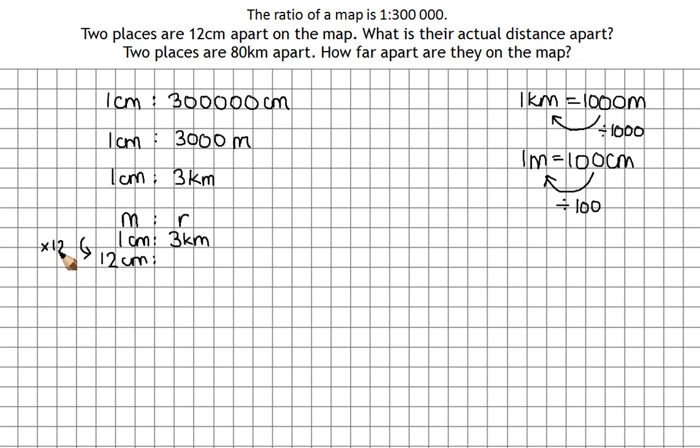So from 1 to 12, I need to multiply by 12. So I need to do exactly the same to the other side. So 3 times 12 is 36. So I know that 12 centimeters is going to be 36 kilometers in real life. So we've done the first part. The answer to the first part is 36 kilometers.